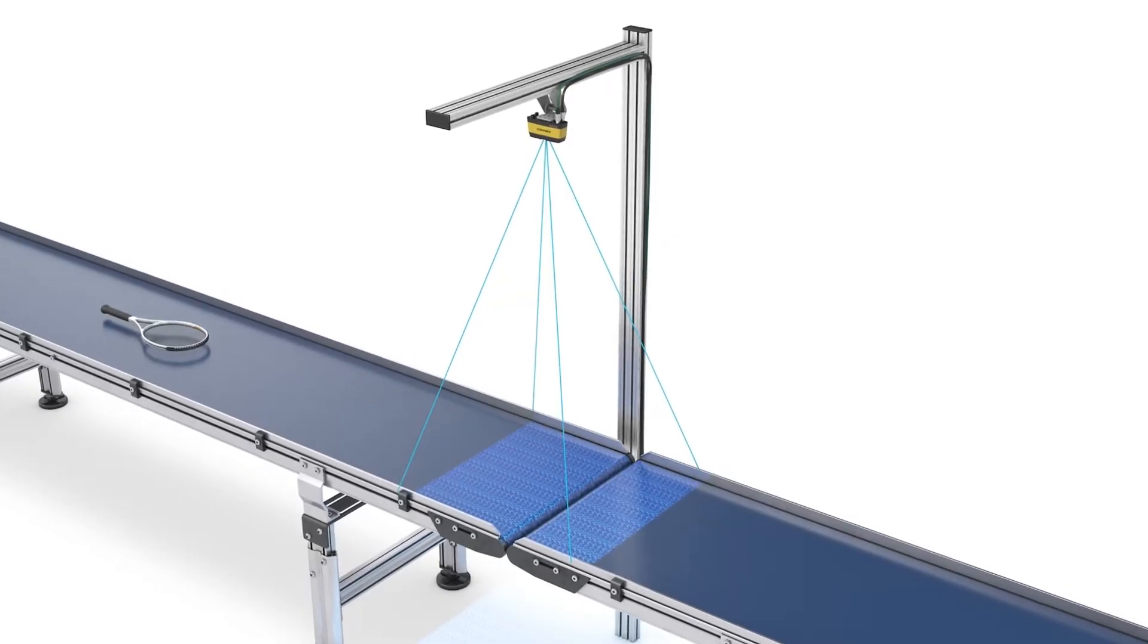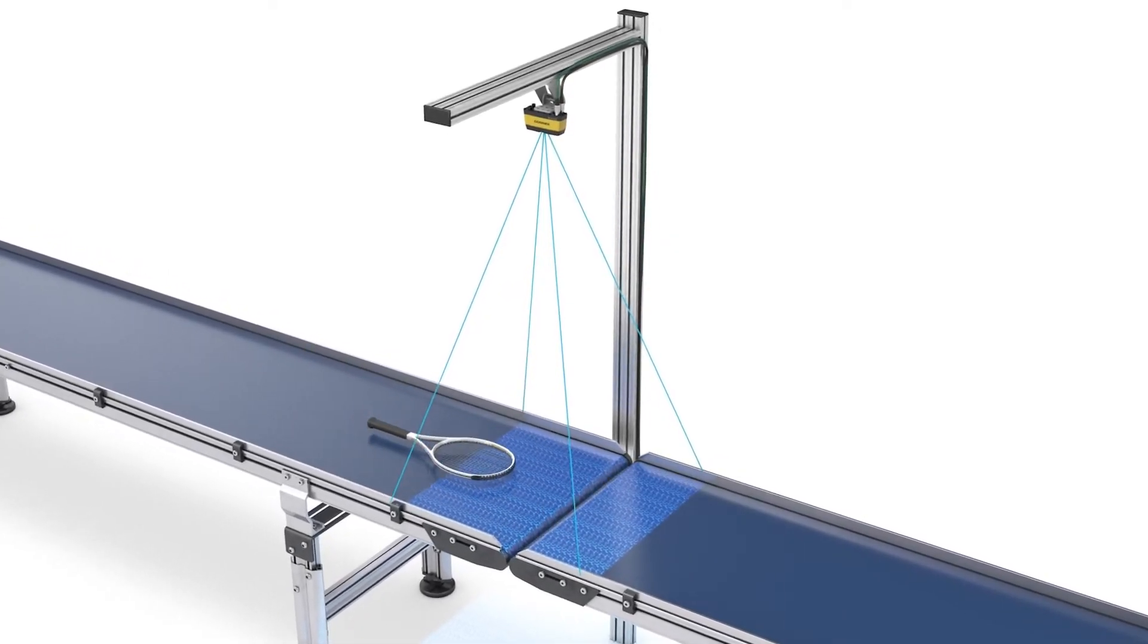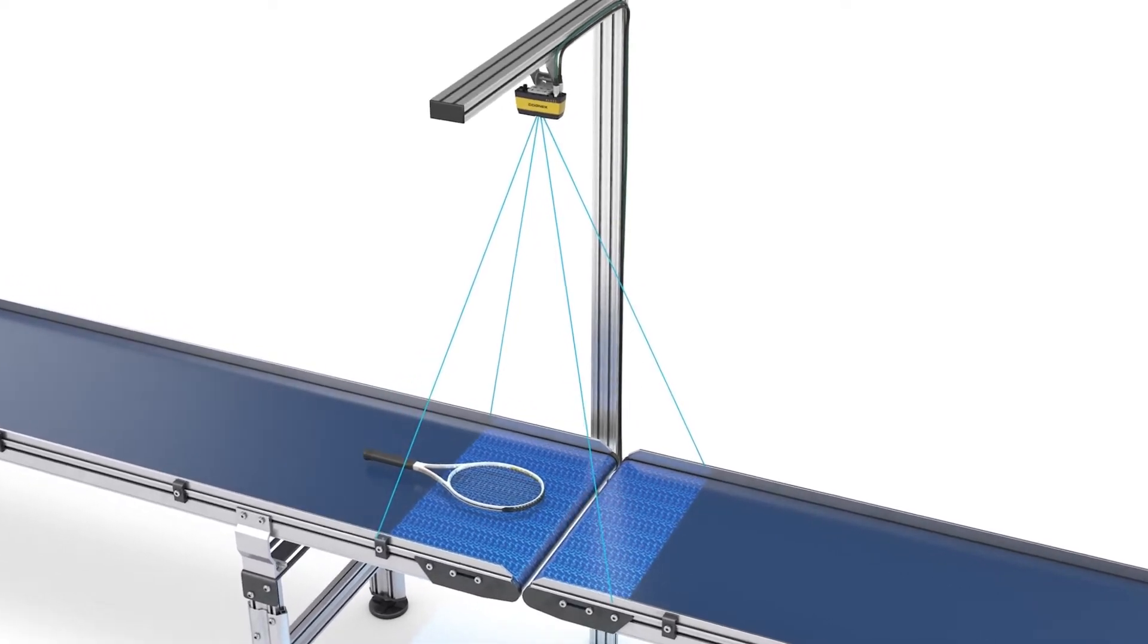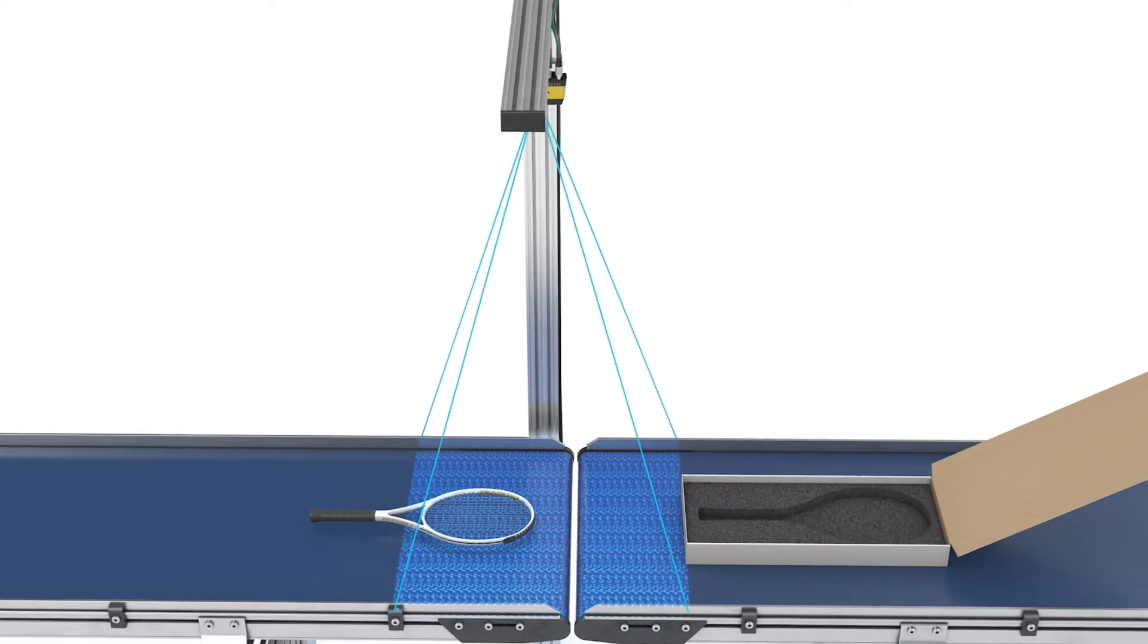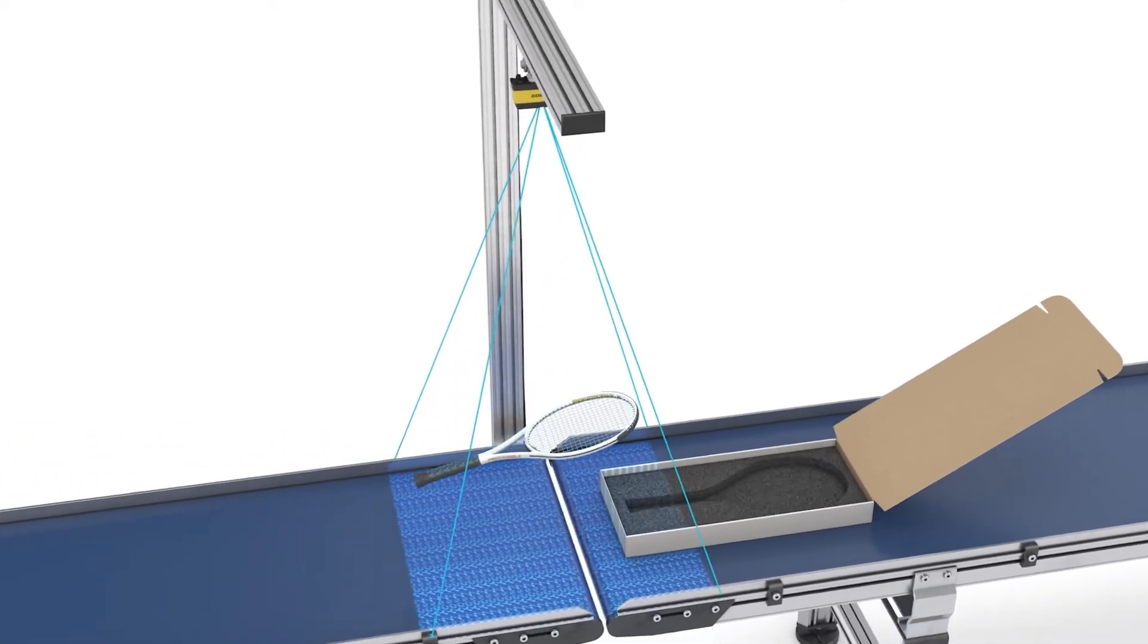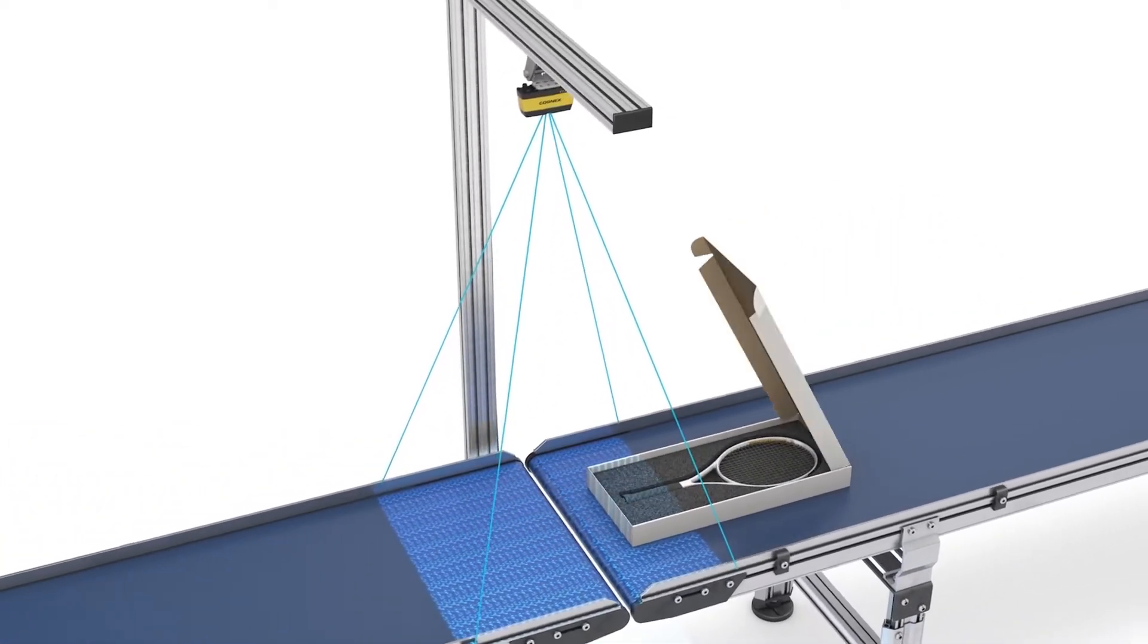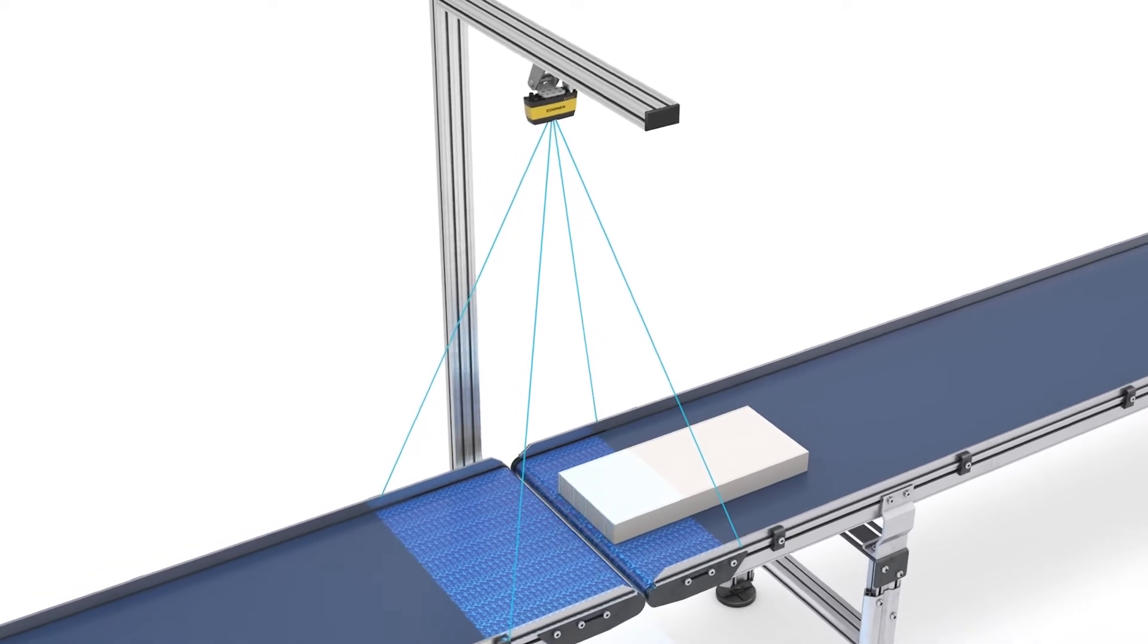Reducing waste also reduces cost, and one of the ways that retailers can do this is with right-sized packaging. Dimensioning systems accurately capture size and shape data to help the packer or automated packaging system find the most appropriate packing, even if the item's not a standard shape.